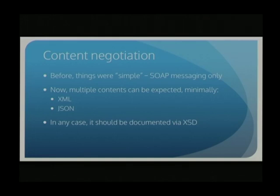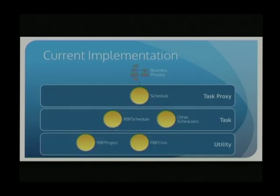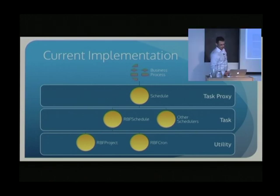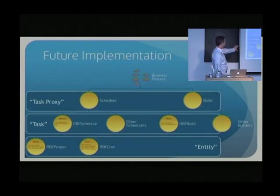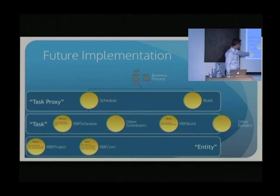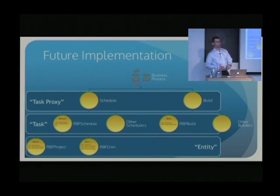Content negotiation was something we didn't have to do before — we were completely WSDL 1.1 SOAP. We had to rethink content negotiation and retailor our XSD for the constructs we were dealing with, since some customers wanted XML and some wanted JSON. In the new version we added REST service symbols and a different bundle for automatic execution of builds and deployments.